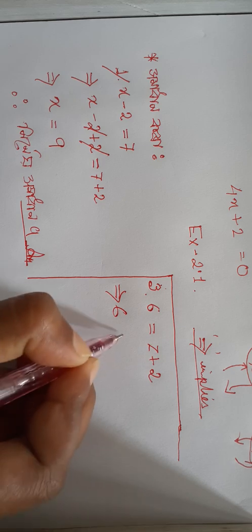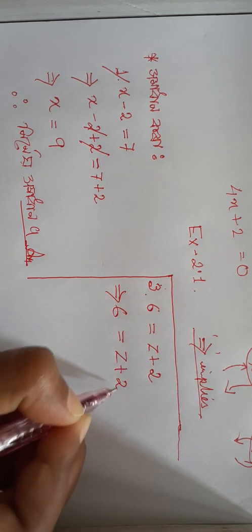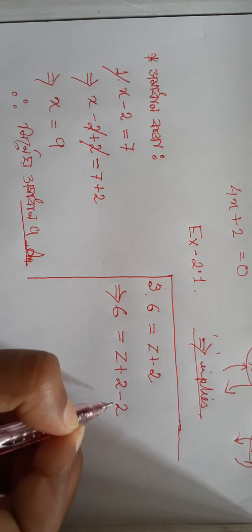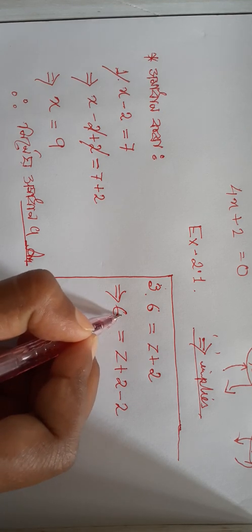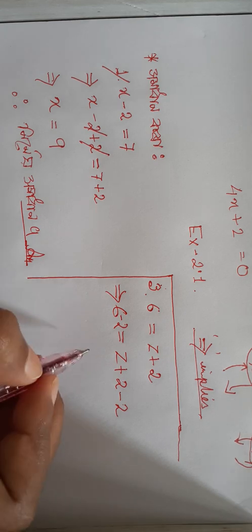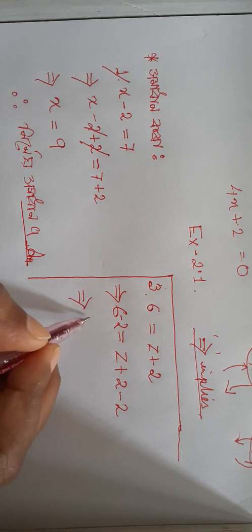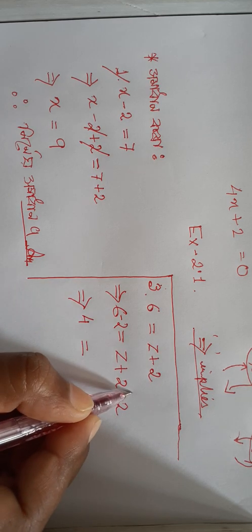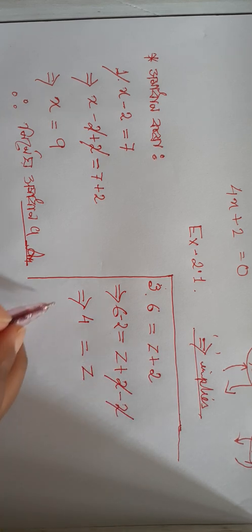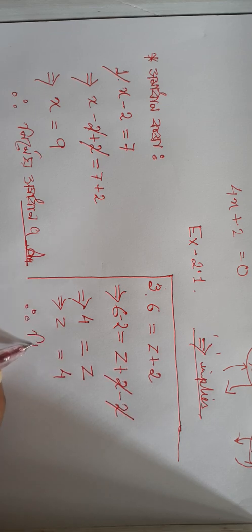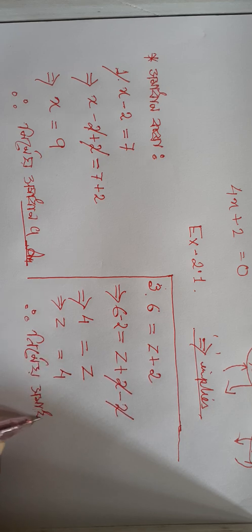6 equals 2z plus 2, minus 2, minus 2. So 0 equals minus 2, minus x equals plus minus 2. Then 6 minus 2 equals to 4. Plus 2 minus 2 cancel — take a bogey, jet implies: jade equal to 4.